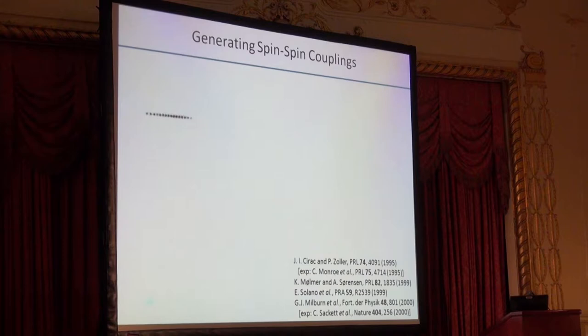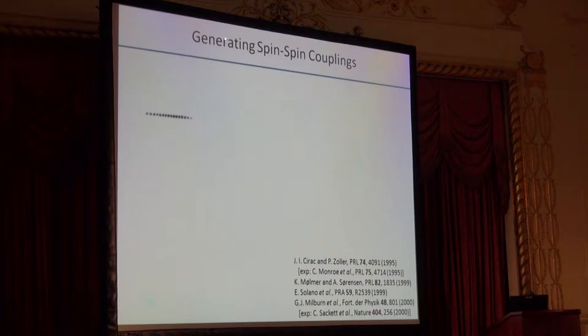Just putting ions in a trap is not enough to make a many-body spin system. We need to figure out a way to generate spin-spin couplings between all of the ions. There have been a variety of theoretical proposals of how to do this, but in general they all focus on coupling the electronic degrees of freedom inside your ions to the collective motional modes along the chain and use those motional modes to share quantum information.